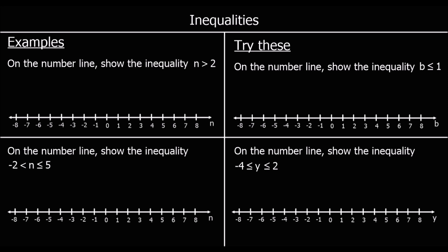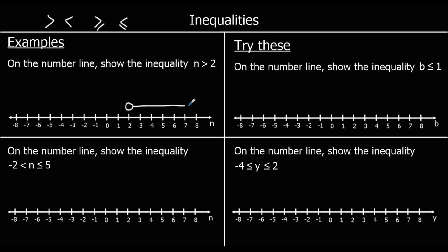Inequalities. When we have inequalities, we are using our greater than, less than, greater than or equal to, and less than or equal to symbols. The first question here says: on the number line, show the inequality n is bigger than 2. So n is on the bigger side. On a number line, we will draw a circle at 2 and draw an arrow in the direction that's bigger. So n can be anything bigger than 2.